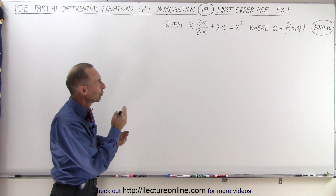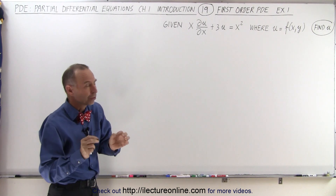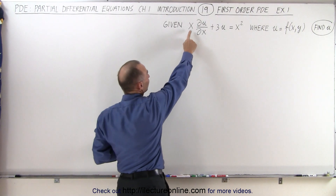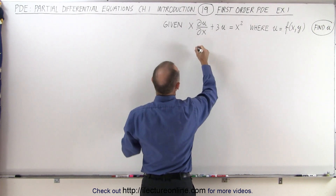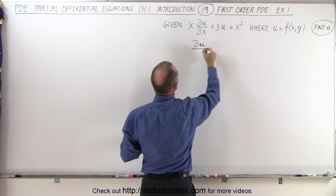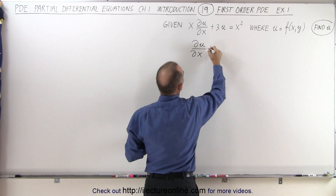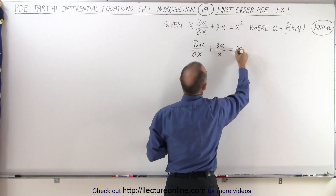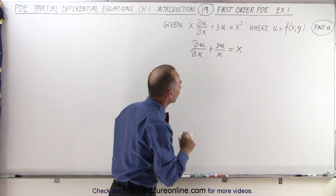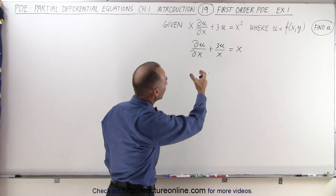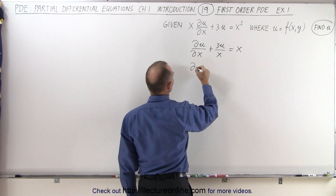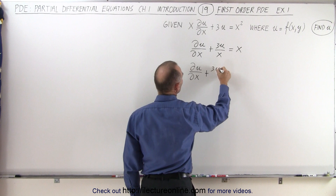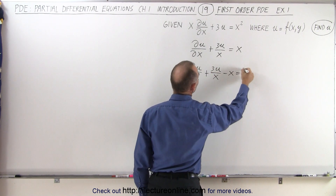Since we don't have the partial of u with respect to y term, that's going to make things a little bit easier. So what we're going to first do is get rid of the x up here and divide everything by x. That means we end up with the partial of u with respect to x plus 3u divided by x equal to x on the right side — x squared divided by x is x. Now we'll move everything over to one side: the partial of u with respect to x plus 3u over x minus x is equal to zero.